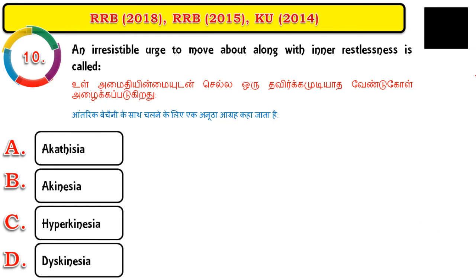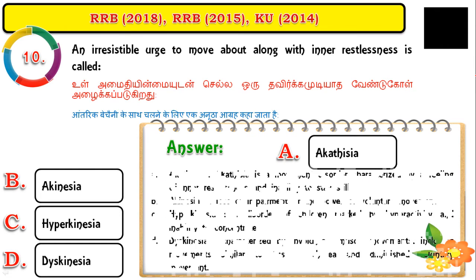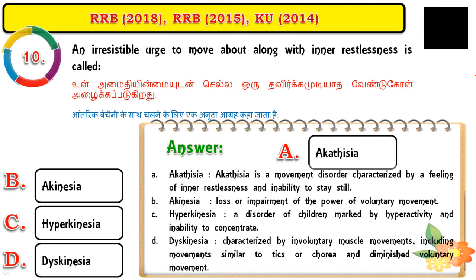Question number ten: an irresistible urge to move along with inner restlessness is called akathisia. Akathisia is a movement disorder characterized by inner restlessness and inability to stay still. Akinesia refers to loss or impairment of voluntary movement. Hyperkinesia is a childhood disorder involving hyperactivity and inability to concentrate. Dyskinesia involves involuntary muscle movements including tic or choreiform movements.